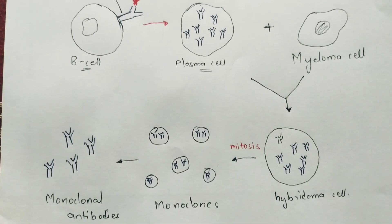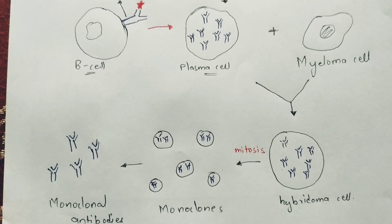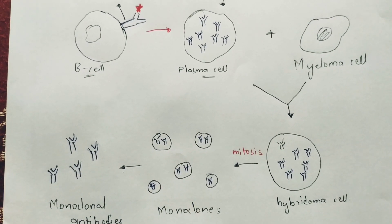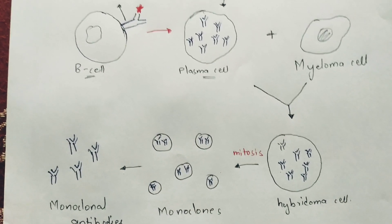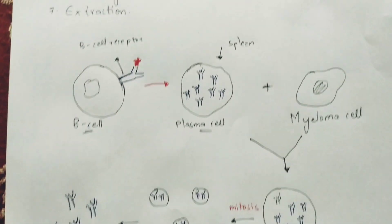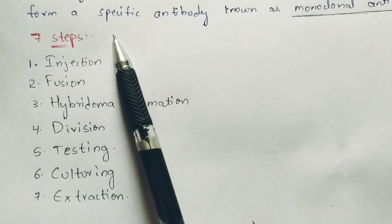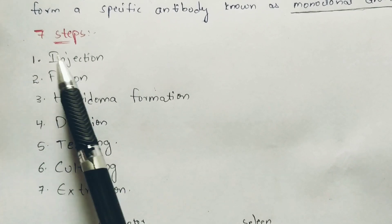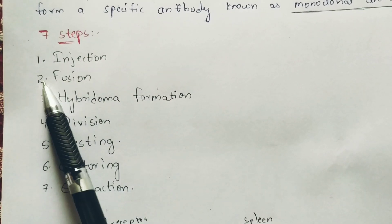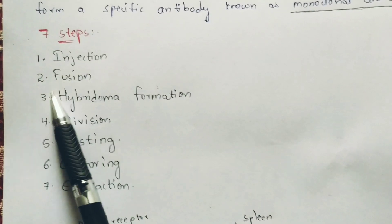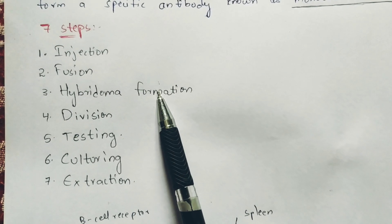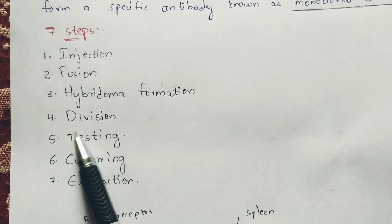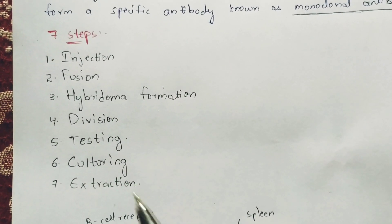Now I am going to explain this whole process step by step by taking an example of a rat. There are totally seven steps. First step is injection, second step is fusion, third one is hybridoma formation, fourth one is division, fifth is testing, and sixth and seventh are culturing and extraction.